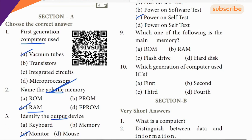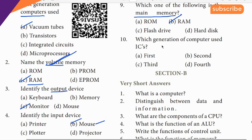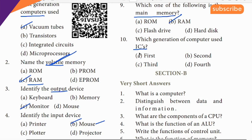9th question, main memory clue: which generation of computers used ICs? The answer is the third generation — IC stands for Integrated Circuit, and the third generation used ICs. That finishes lesson 1.